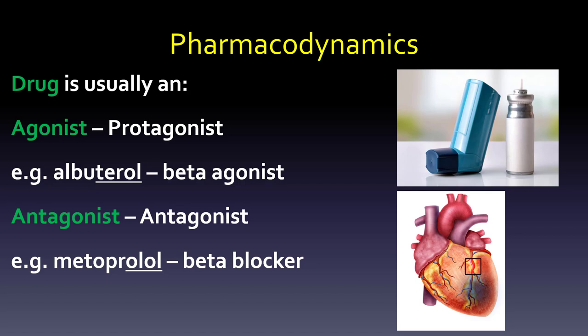We have to figure out first: is that drug an agonist or an antagonist? An agonist is one that will activate something. For example, if you've taken an inhaler like albuterol (ProAir HFA), that is a beta agonist that activates your lungs and opens them up. An antagonist would be like a beta blocker such as metoprolol — that affects your heart by blocking its beta receptors, reducing heart rate. Something like propranolol also lowers heart rate while blocking the lungs — but that's pharmacodynamics.